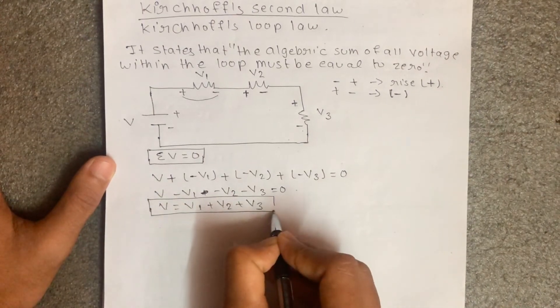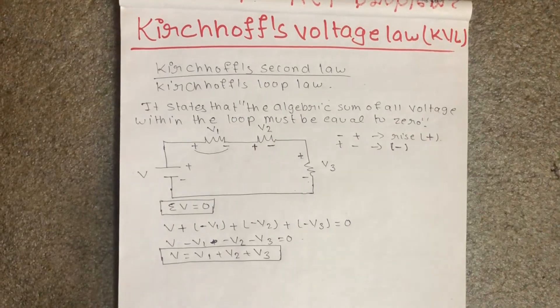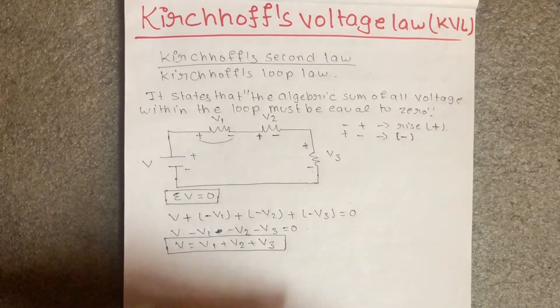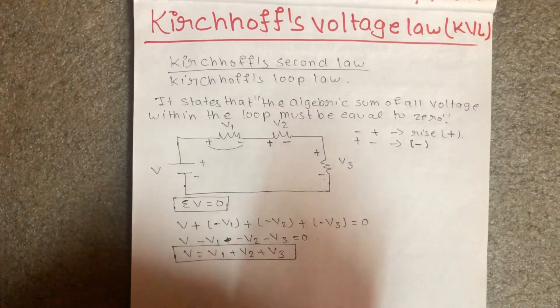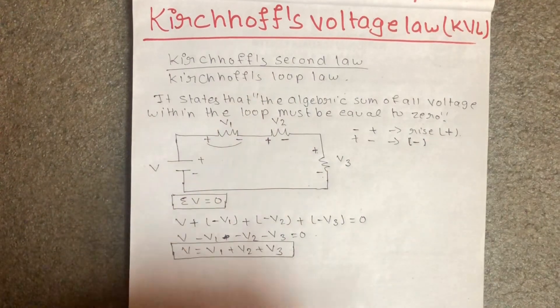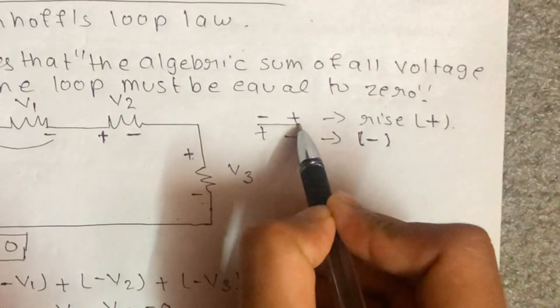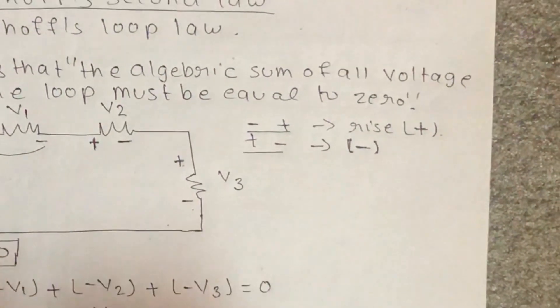Kirchhoff's voltage law, when you're using this law in the future, it's Kirchhoff's second law or Kirchhoff's loop law. When the voltage in the loop equals zero, negative to positive is rising, positive to negative is dropping. Thank you.